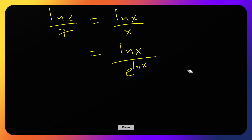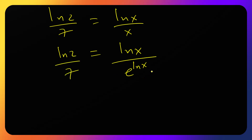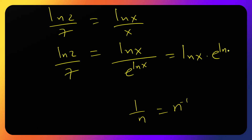We rewrite ln(x)/e^(ln x) in linear form. Since 1/n equals n^(−1), this is the same as ln(x)·e^(−ln x). So ln(2)/7 equals ln(x)·e^(−ln x).